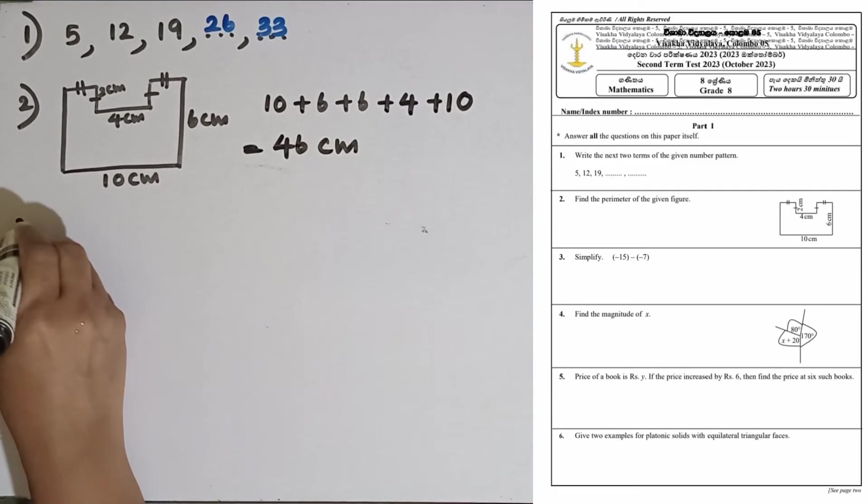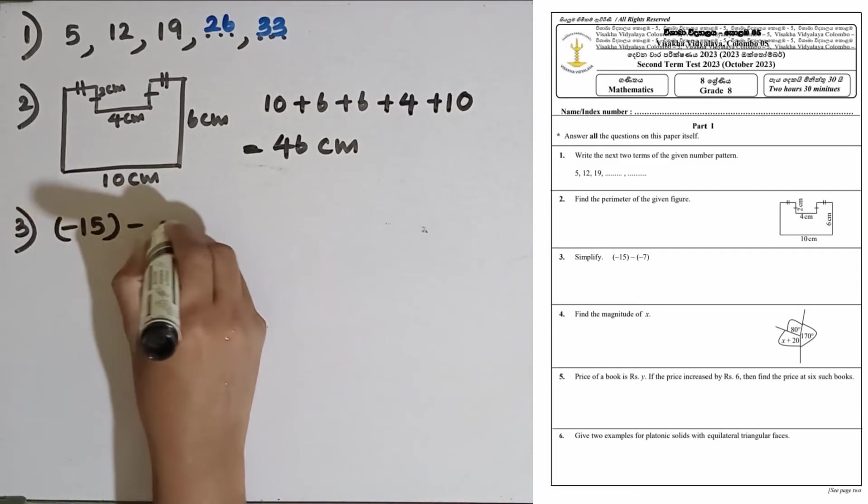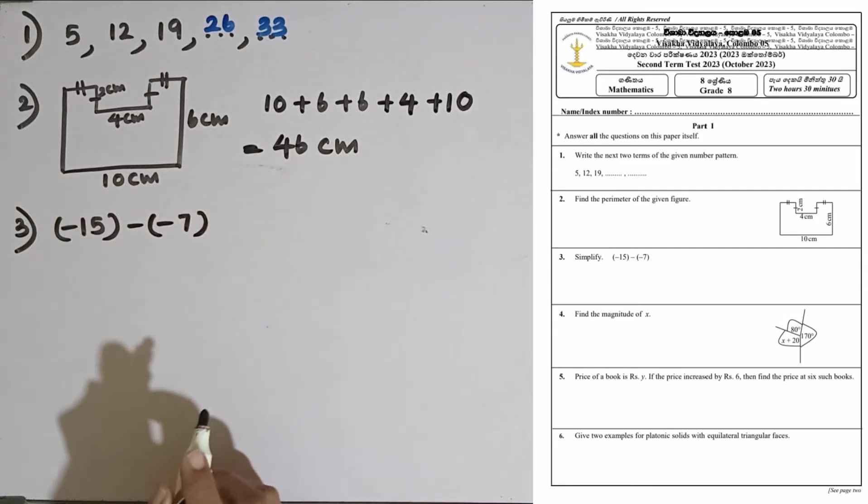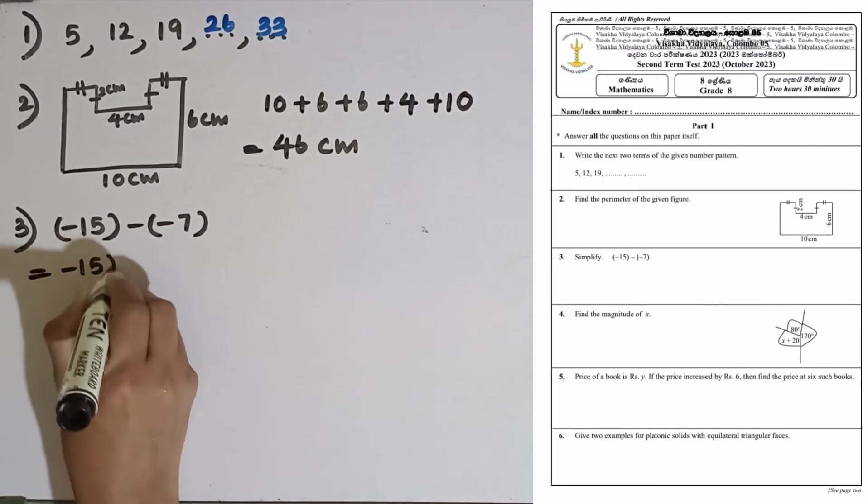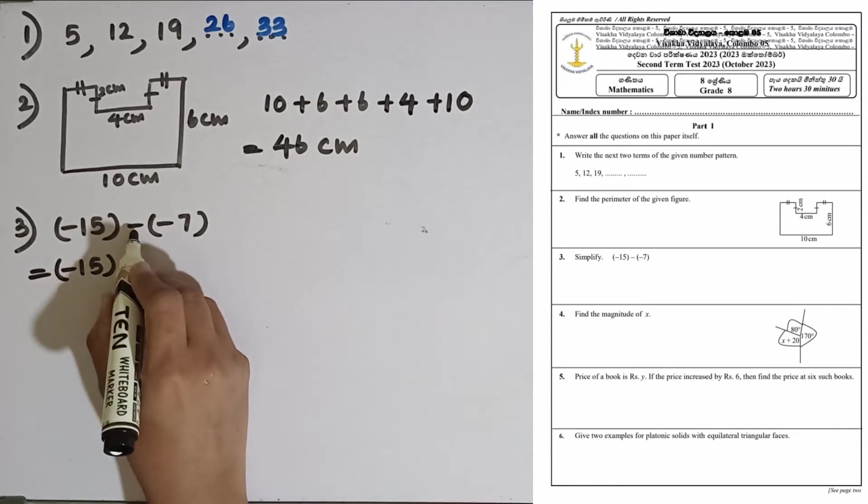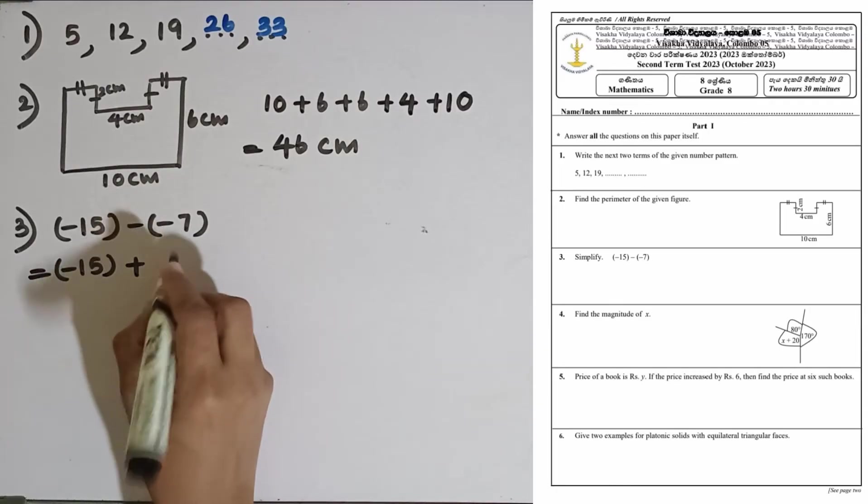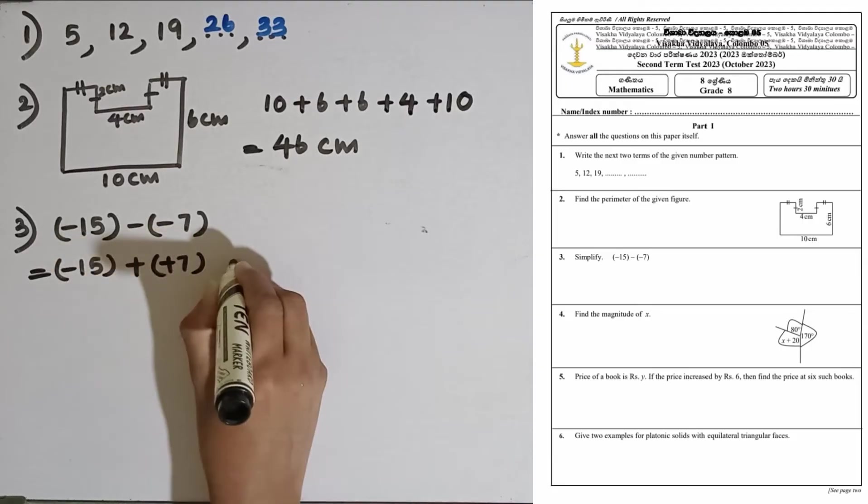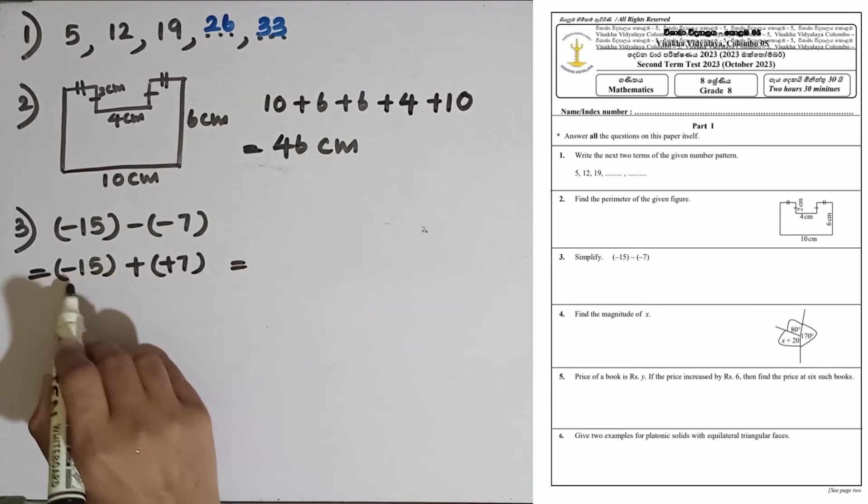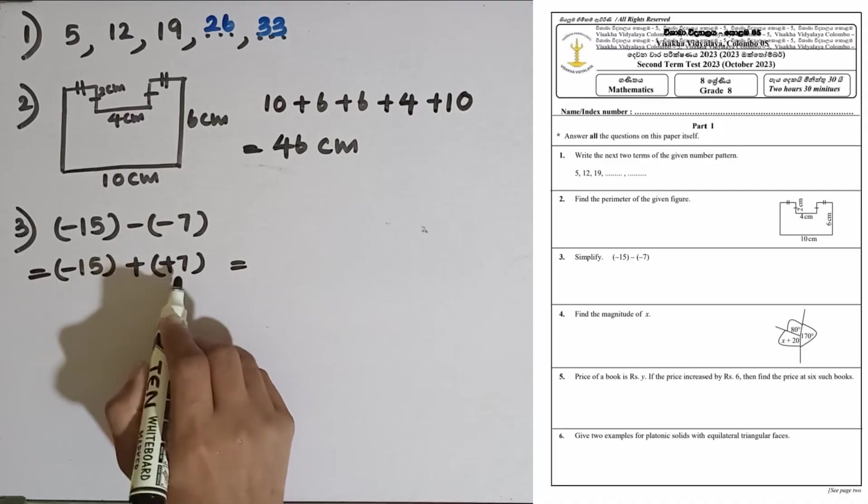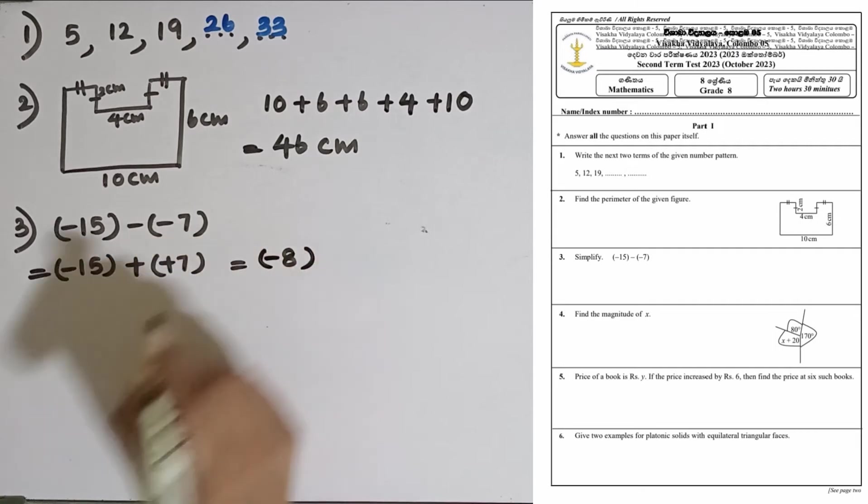Question number 3: We are given this to simplify, minus 15 minus minus 7. Minus 15, then we have to convert this subtraction into addition by taking the additive inverse of this second directed number, that is plus 7. Minus 15 plus 7, the answer is minus 8. We have to take the difference between the two magnitudes, 15 minus 7 is 8, then we have to take the sign with the largest magnitude.